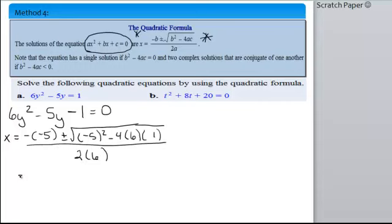Now, you just simplify this as much as you can. So, negative over negative is a positive. Negative 5 squared is 25. 4 times 6 times 1 is 24. And 25 minus 24 is 1. 2 times 6 is 12.